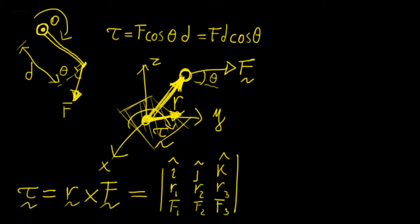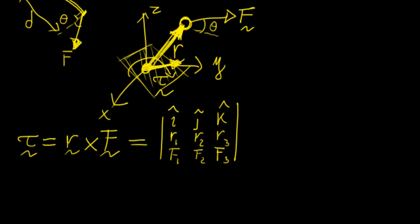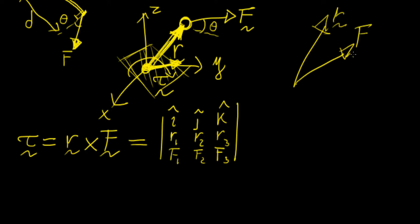So that is what we have. The interesting thing is that if we redraw the two vectors R and F, then calculating the cross product gives us a vector perpendicular to both of them, and that perpendicular vector is the torque.